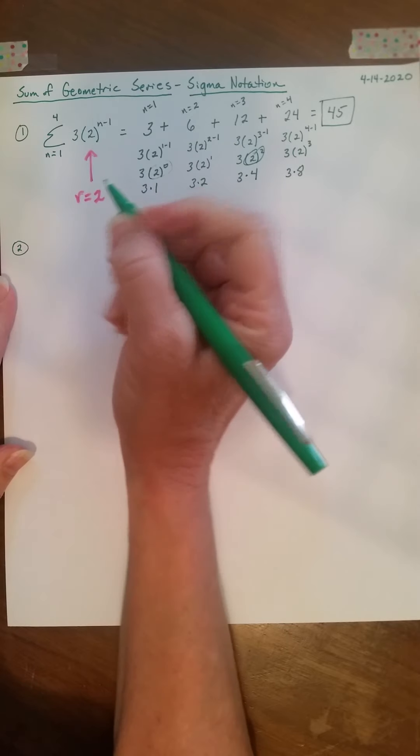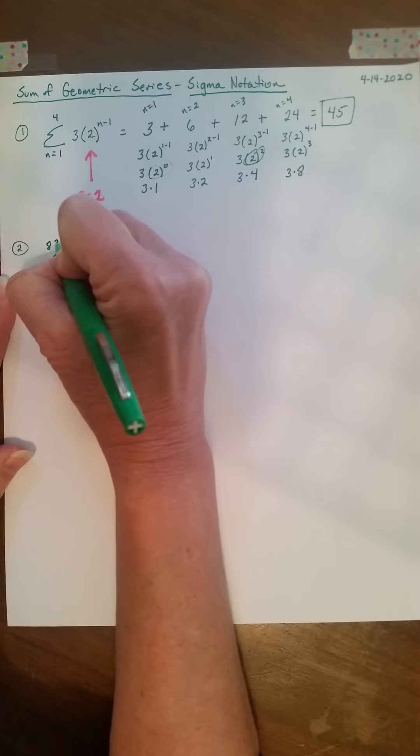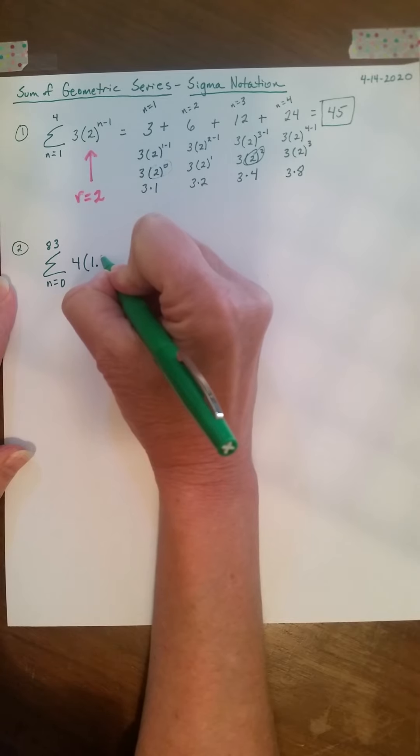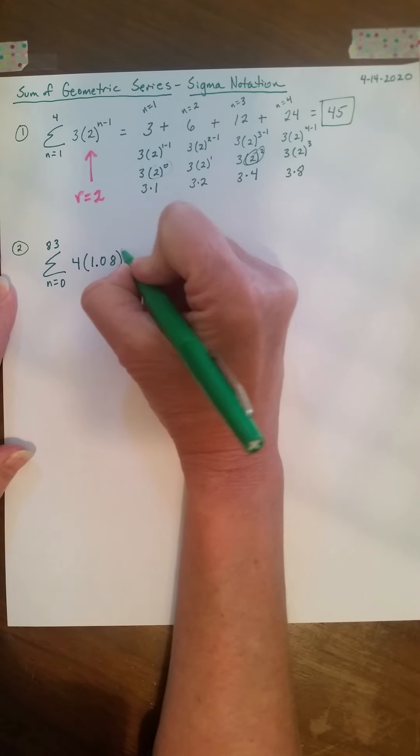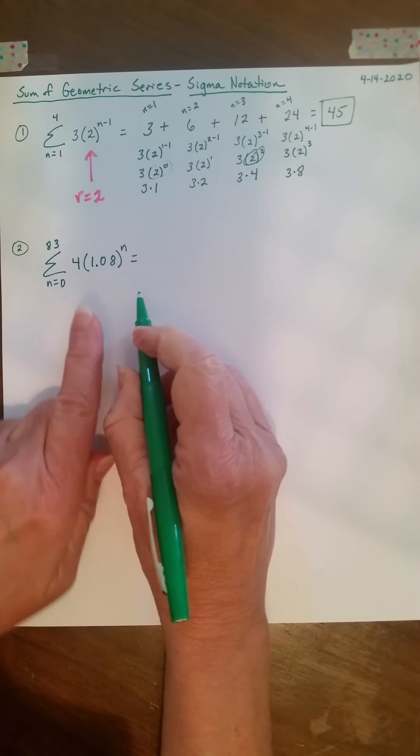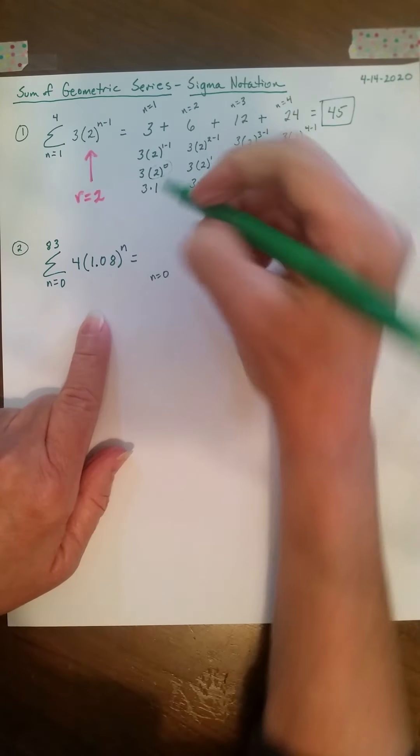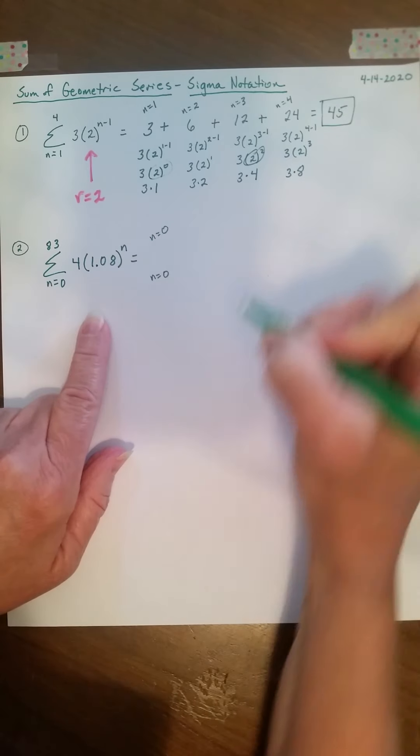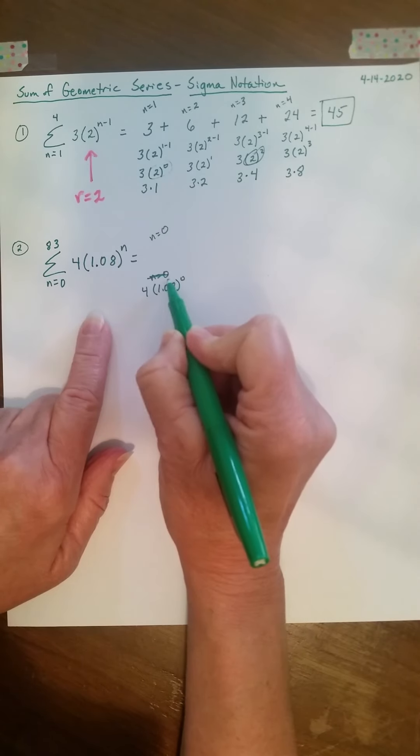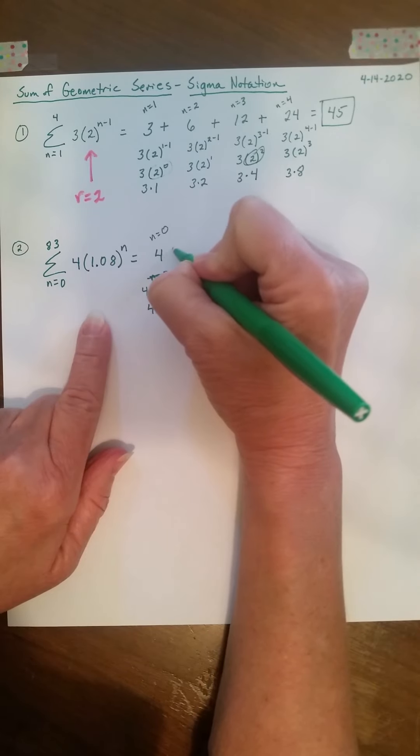Okay, so number 2. Suppose I'm asked to find the sum from n equals 0 to 83 of 4 times 1.08 to the n. Okay? Well, I'm going to want to find my first term, n equals 0. When I put in n equals 0, sorry, I did that wrong. When I put in n equals 0, I have 4 times 1.08 to the 0. Well, that's 1. So 4 times 1 is 4.